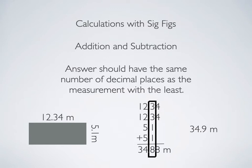You can only have as good an answer as your worst measurement. And our worst measurement here is rounded off in the tenths place. That means our answer needs to be rounded off to the tenths place. So that's how you do addition and subtraction.